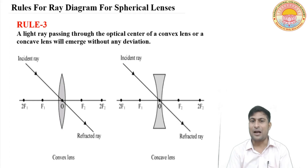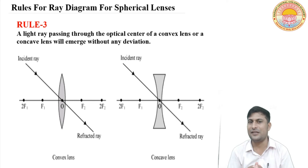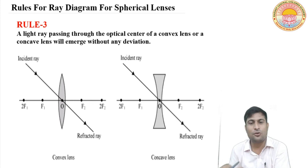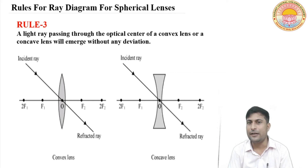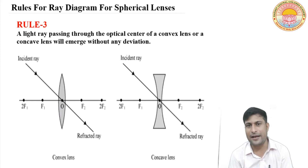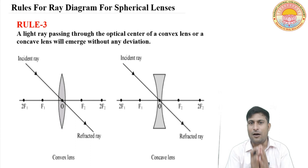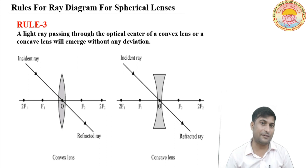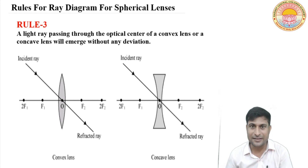Third rule: if a light ray passes through the optical center of a concave lens or convex lens, then it will pass without any deviation.